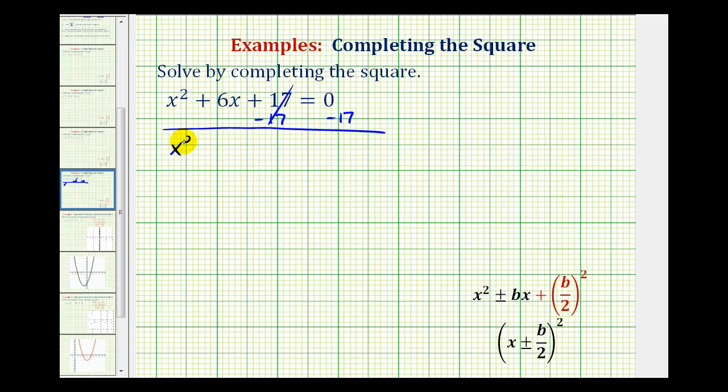We would have x squared plus 6x. Now we're going to make this a perfect square trinomial by adding a constant here. So I'm going to leave a space for the constant. And then on the right side of the equation we have negative 17.